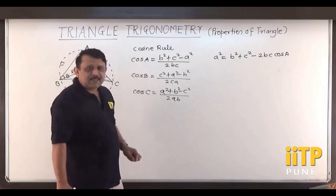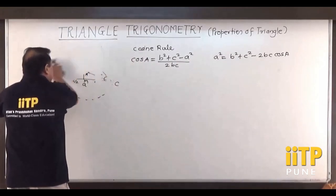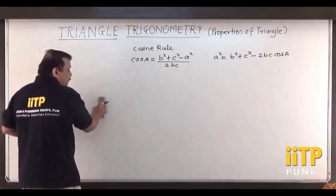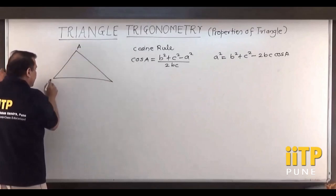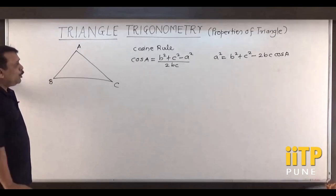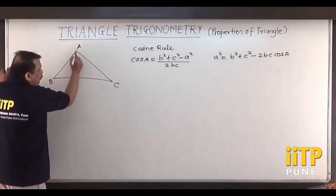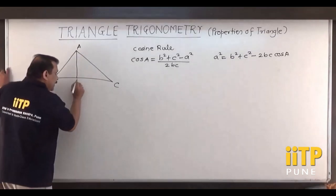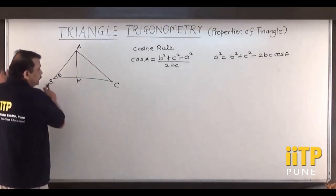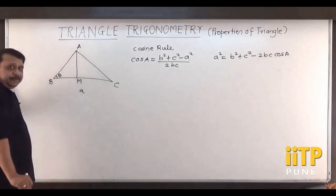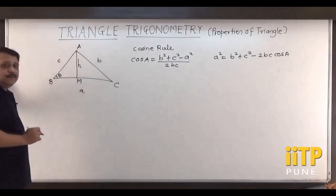Let us try to prove one of the results; the others follow similarly. Draw triangle ABC again for the proof of the Cosine Rule. From point A, drop the perpendicular on the opposite side BC at point M. This angle at B is known to be B, and the total distance BC is small a.